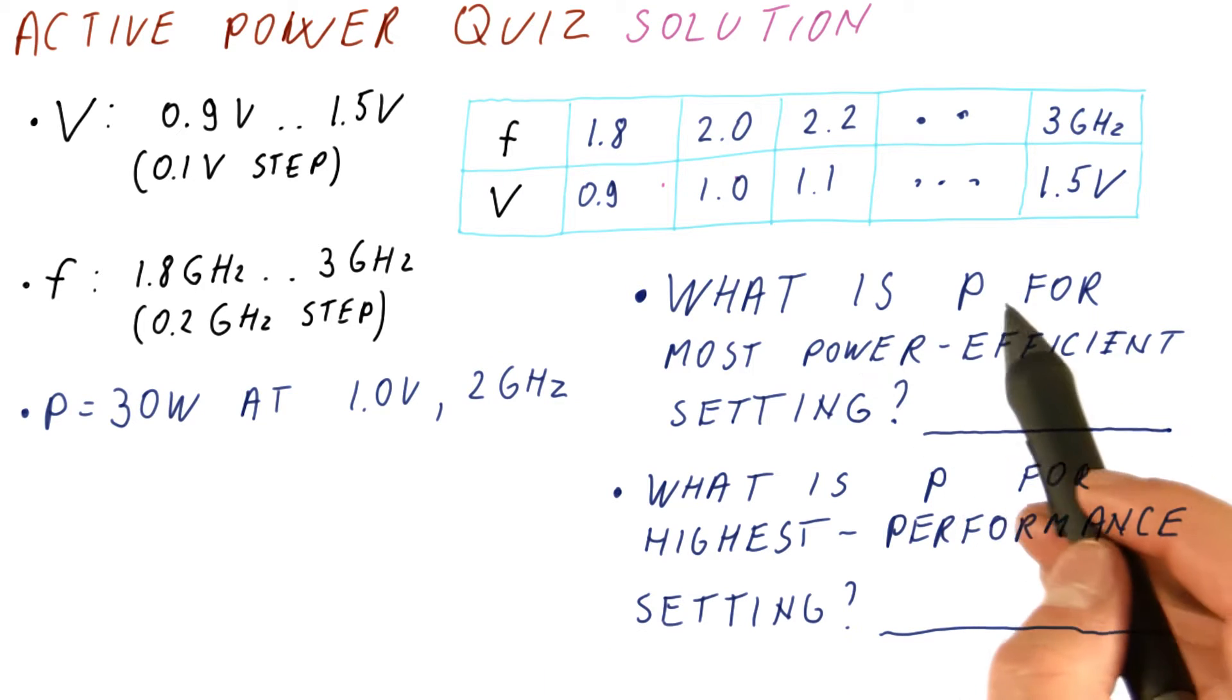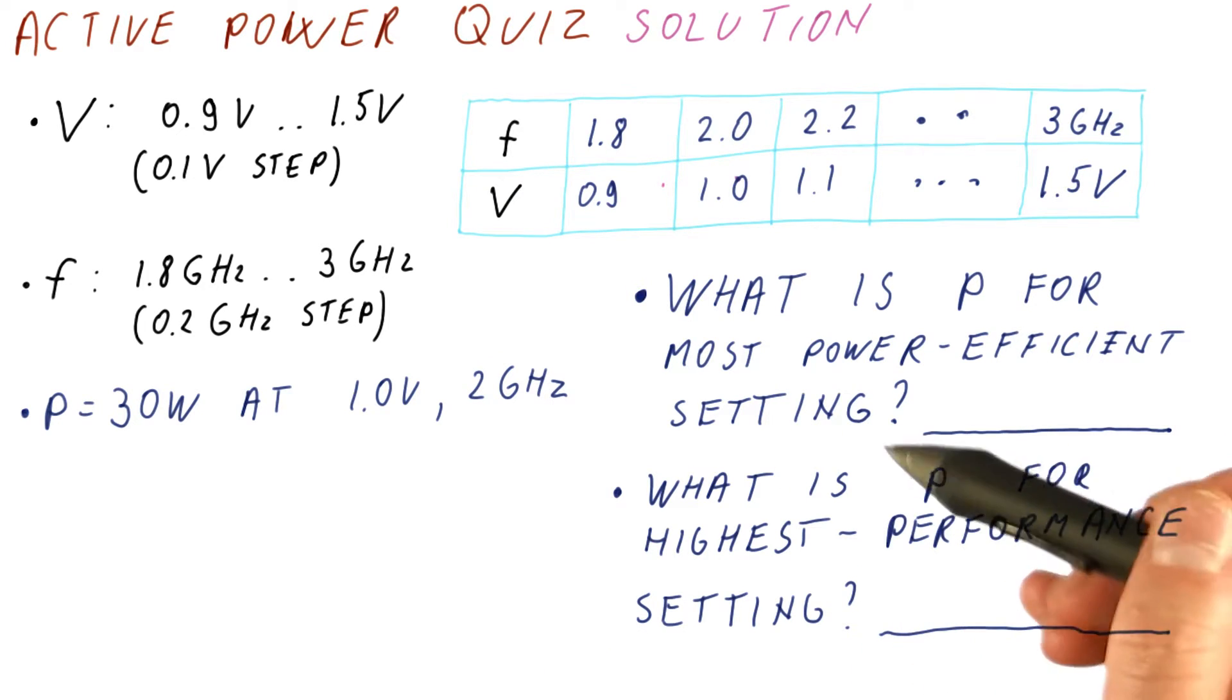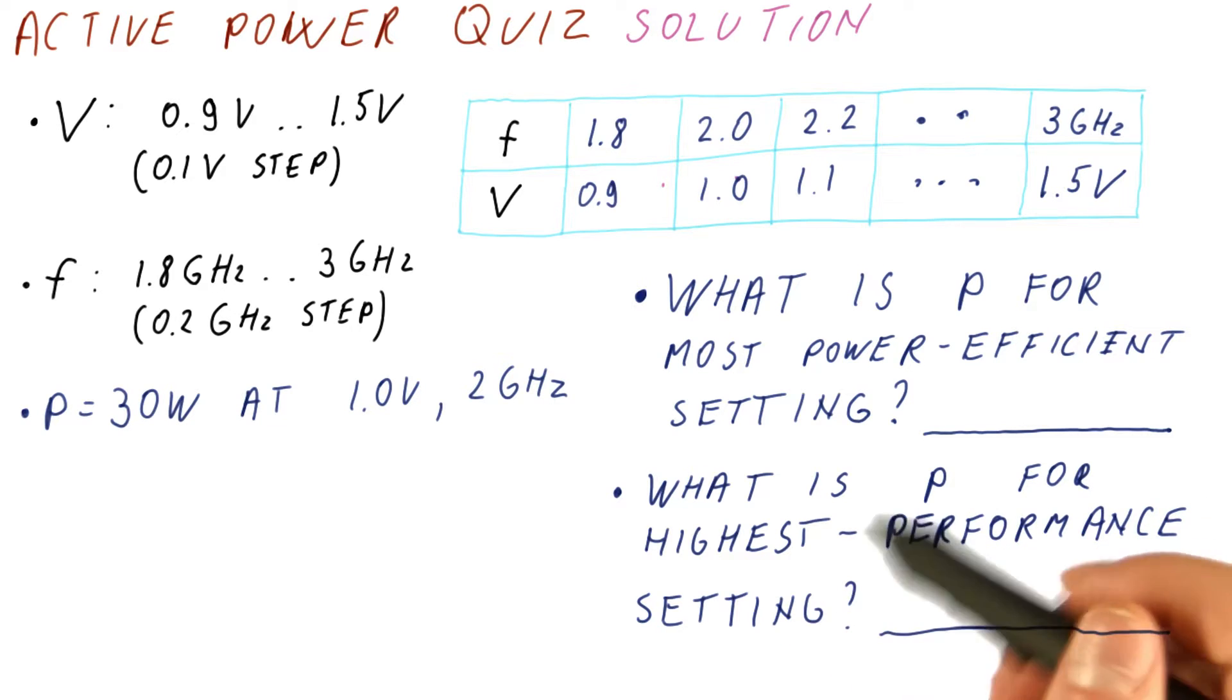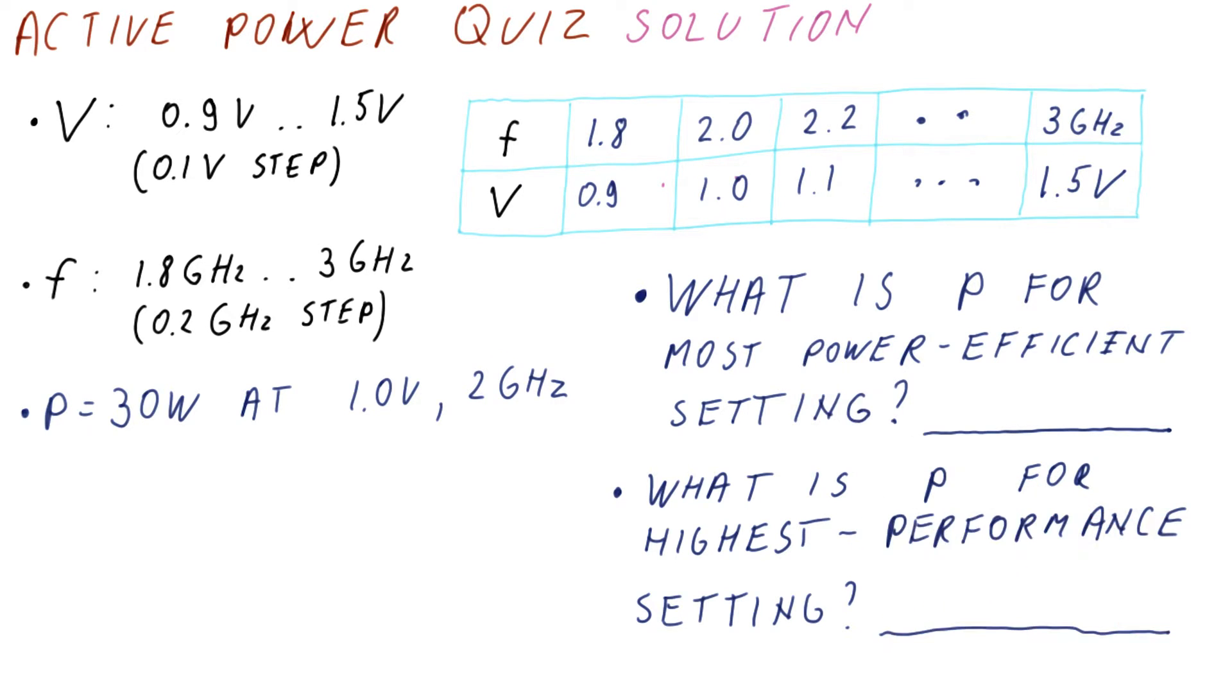So the question is, what is the power for the most power efficient setting? And what is the power for the highest performance setting? The most power efficient setting will be the one with the lowest frequency and the lowest voltage.